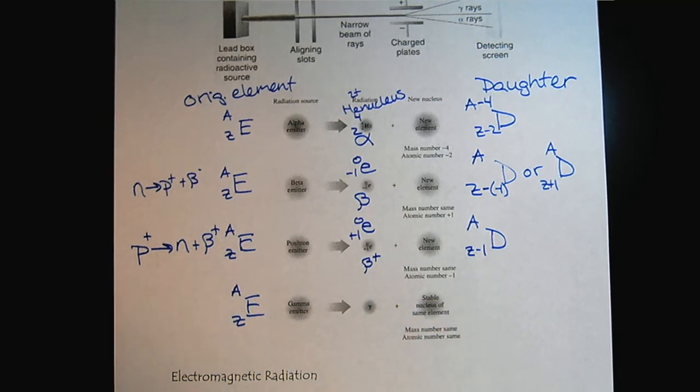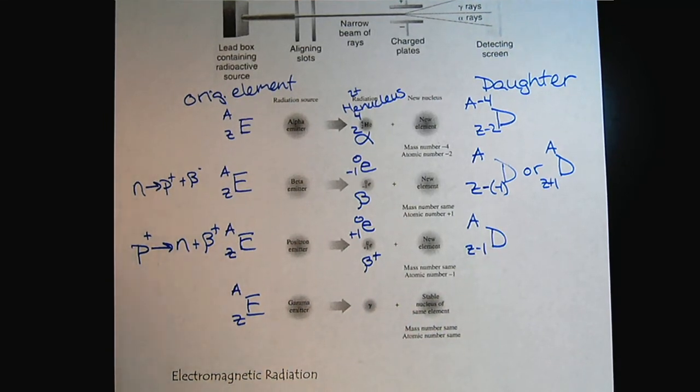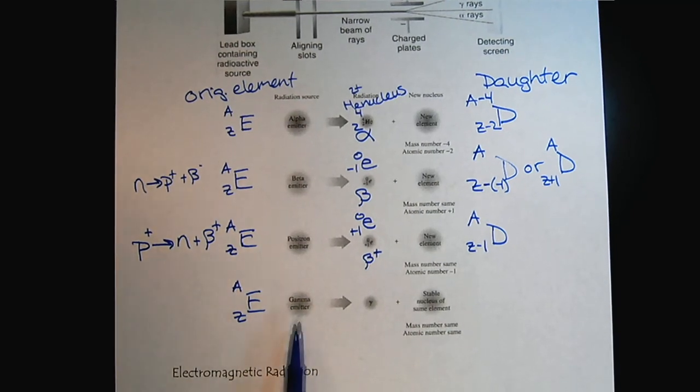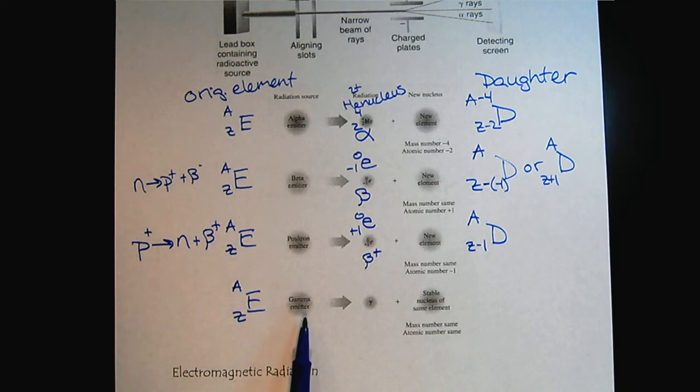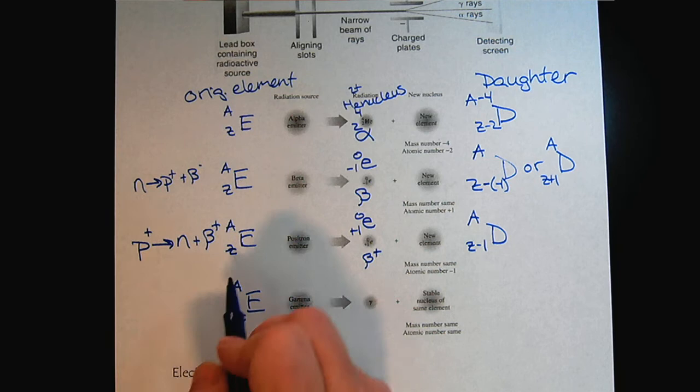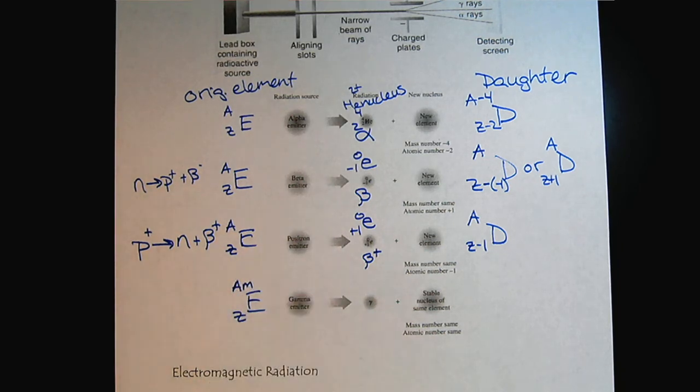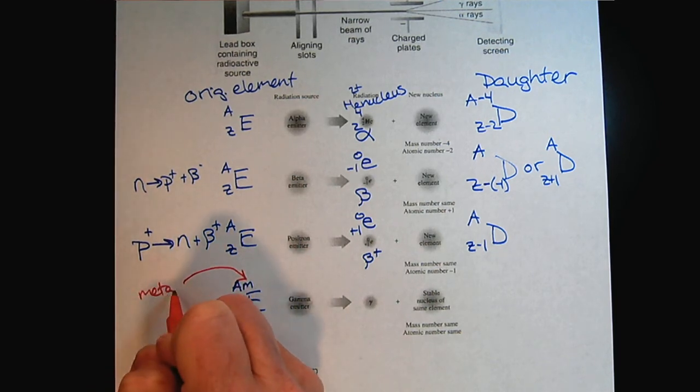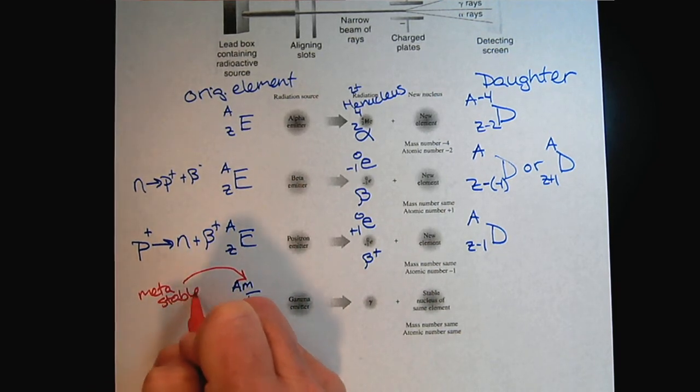And then the last form that we're going to look at, there is electron capture, but we don't need to worry about that one. We will look at gamma emitters. And what happens here is that there becomes an M. So what does this M stand for? This M stands for metastable, not quite stable.